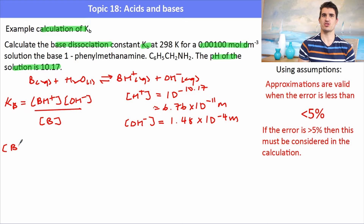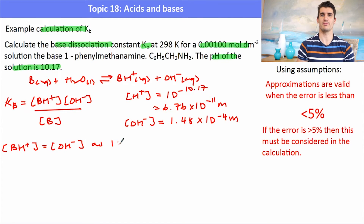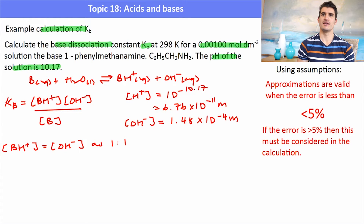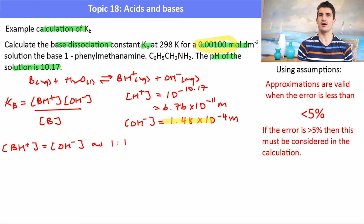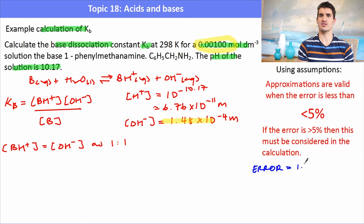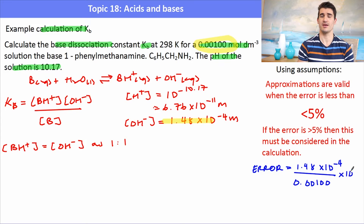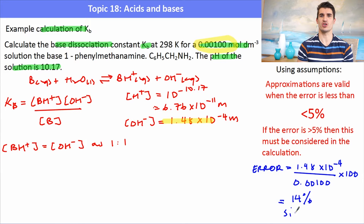Now we make our assumptions. Again, BH+ equals OH- in a one-to-one ratio, so we assume they're equal. For the second assumption, we check the concentration of hydroxide against the concentration of the base to see if it's within the range of error. We take the OH- concentration, divide it by the concentration of the base, and multiply by 100. In this case it's 14%, which is not less than 5%.